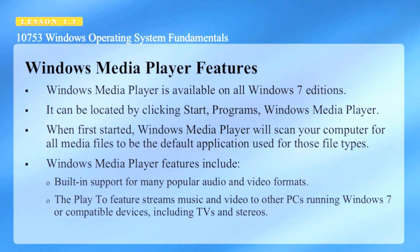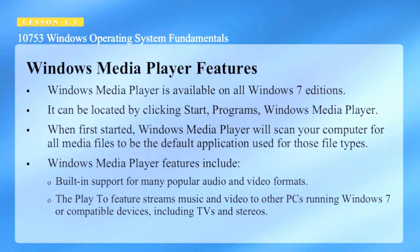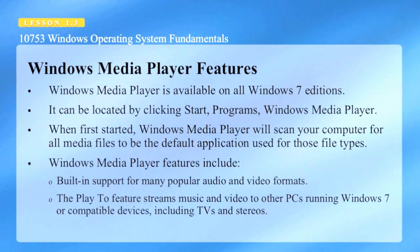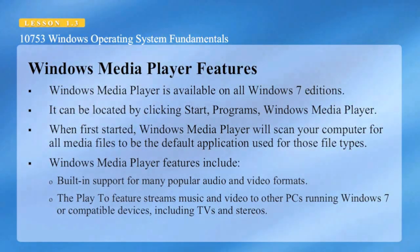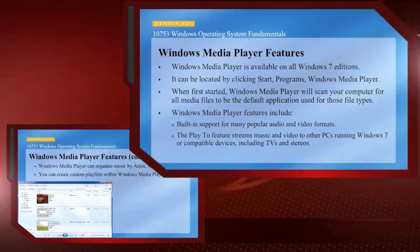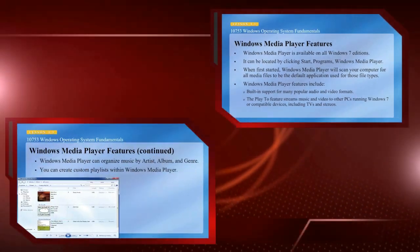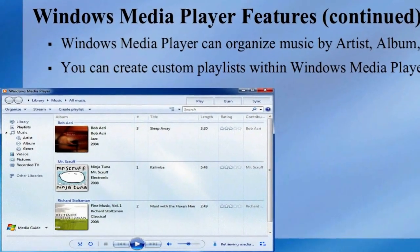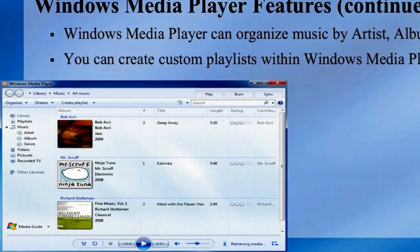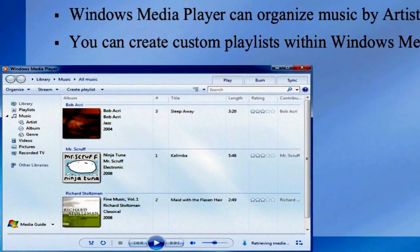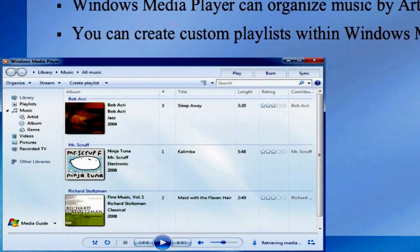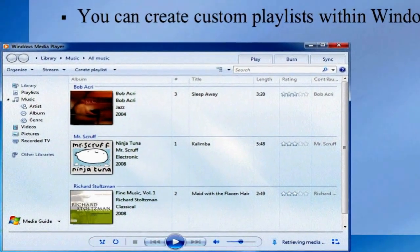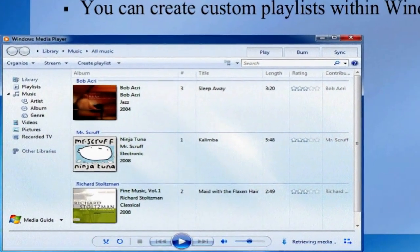The Play To feature streams music and video to other PCs running Windows 7 or compatible devices including TVs and stereos. Other Windows Media Player features include the ability to organize by artist, album, and genre, as well as create custom playlists.